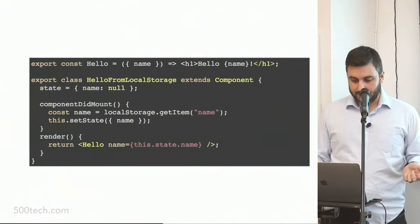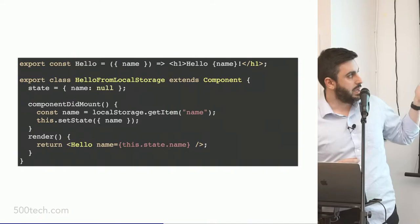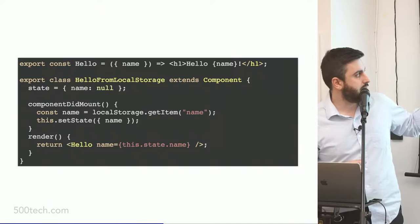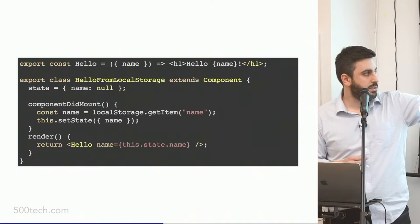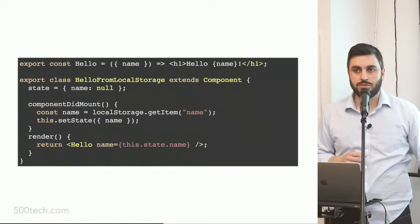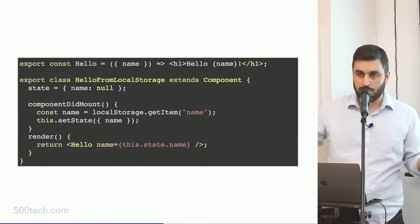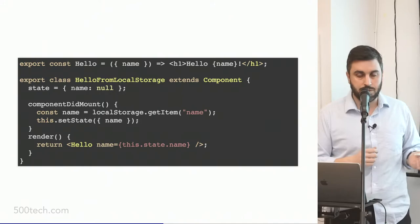For example: I had a 'hello' component and now I need to grab the name from local storage. Just write a new simple container — you have state, you have component mount, look at local storage and pass the information to 'hello'. Now remove 'hello' from the tree, put 'hello from local storage' there, and you're set. If you have a problem in the future with local storage, like people not seeing their names, you know exactly where to look. And it's going to be easy.